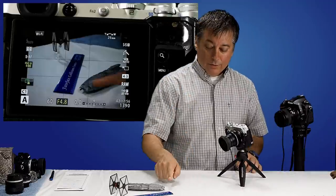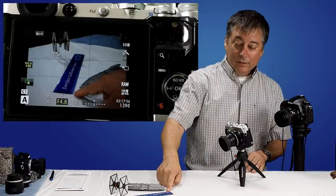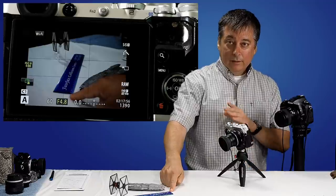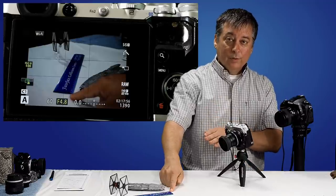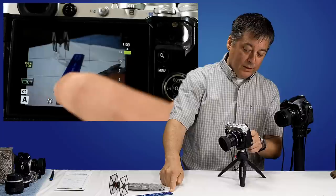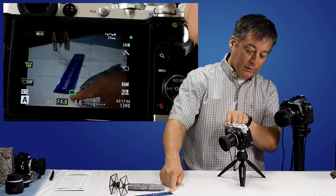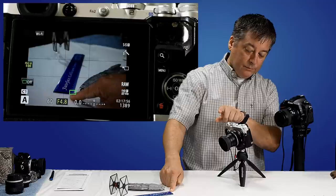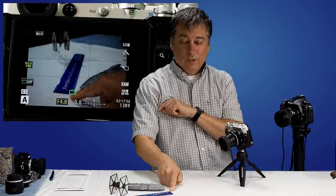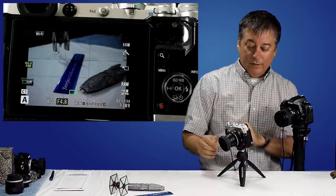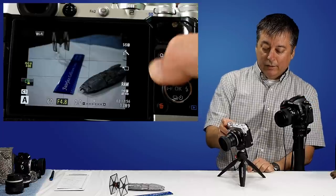But before I take any bracketed pictures, what I like to do is turn bracketing off real quick. I like to take my first picture pointing at the first focus point for the focus bracketing. So I'm going to touch screen here with my focus point and take a picture here. That'll be my first picture. I'll explain why I do that in a minute.